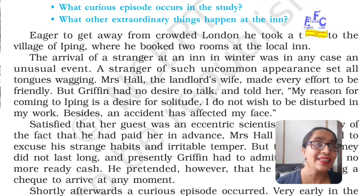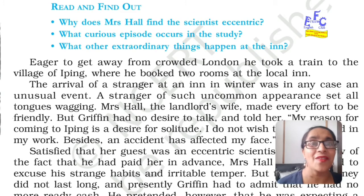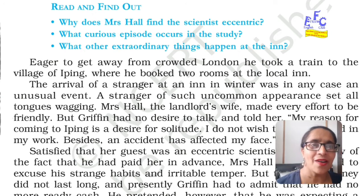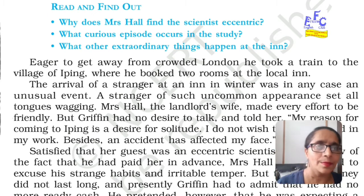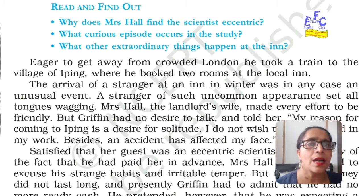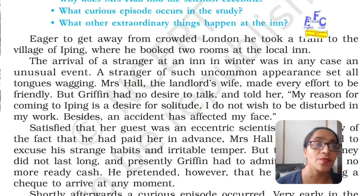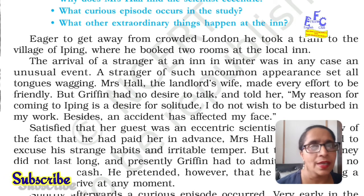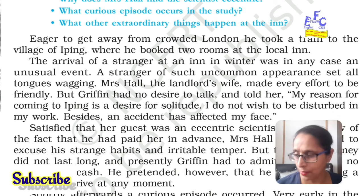Eager to get away from crowded London, he took a train to the village of Iping where he booked two rooms at a local inn. London was quite a busy place and he wanted to stay calm for some time. The arrival of a strange man at the inn in winter was an unusual event, because people never went out to enjoy in winter. So his arrival in winter was the first unusual thing that people of Iping noticed.